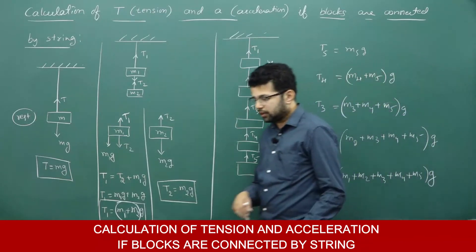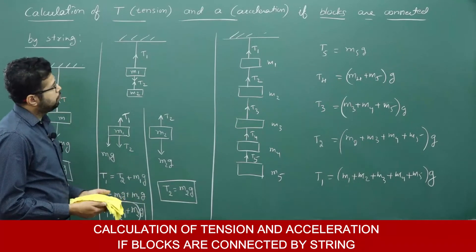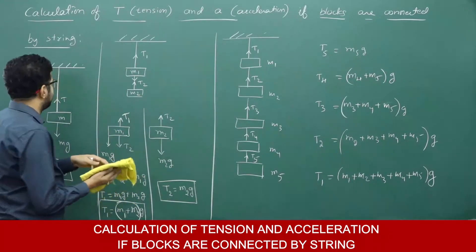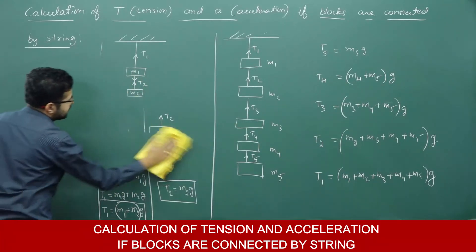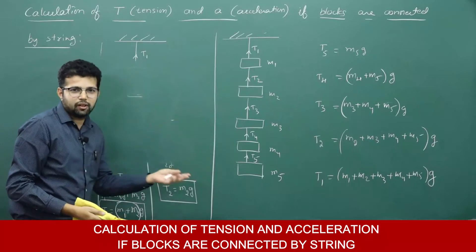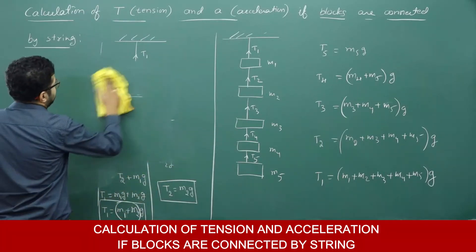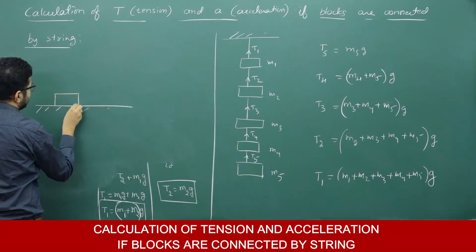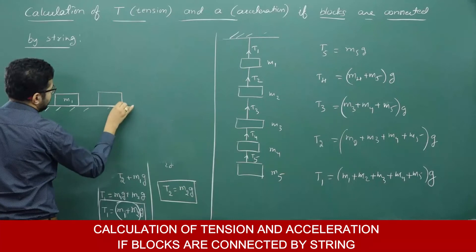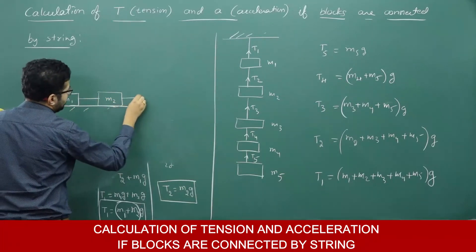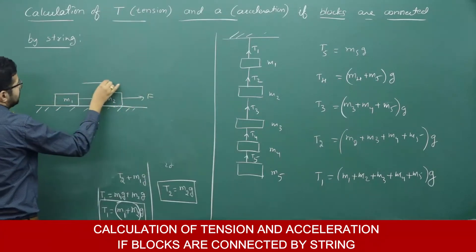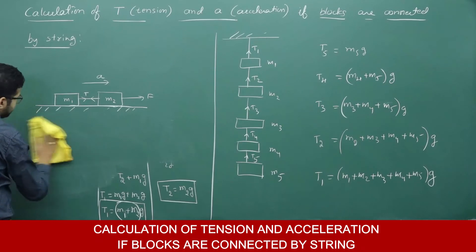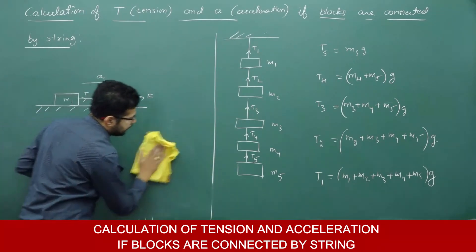Now let us consider one more situation. If two blocks are connected by a string and some horizontal force is applied on the system, how do we write the equation for tension and acceleration? In all previous situations the system was at rest — acceleration was not there. But now say there is a horizontal surface with two blocks m1 and m2 connected by a string. Applying a horizontal force causes the system to move with some acceleration A. There will be tension in the string, and we need to find that tension and acceleration.